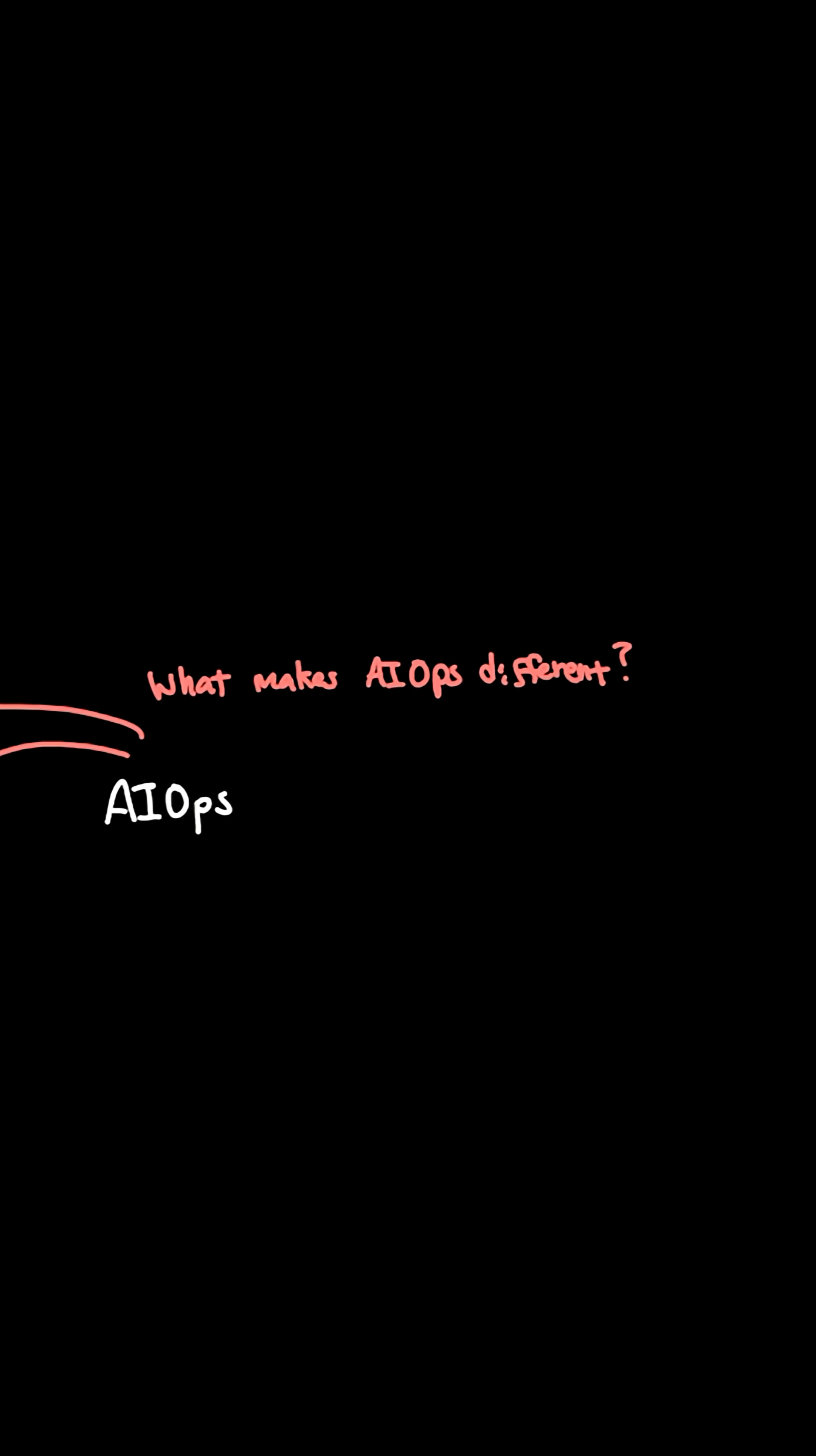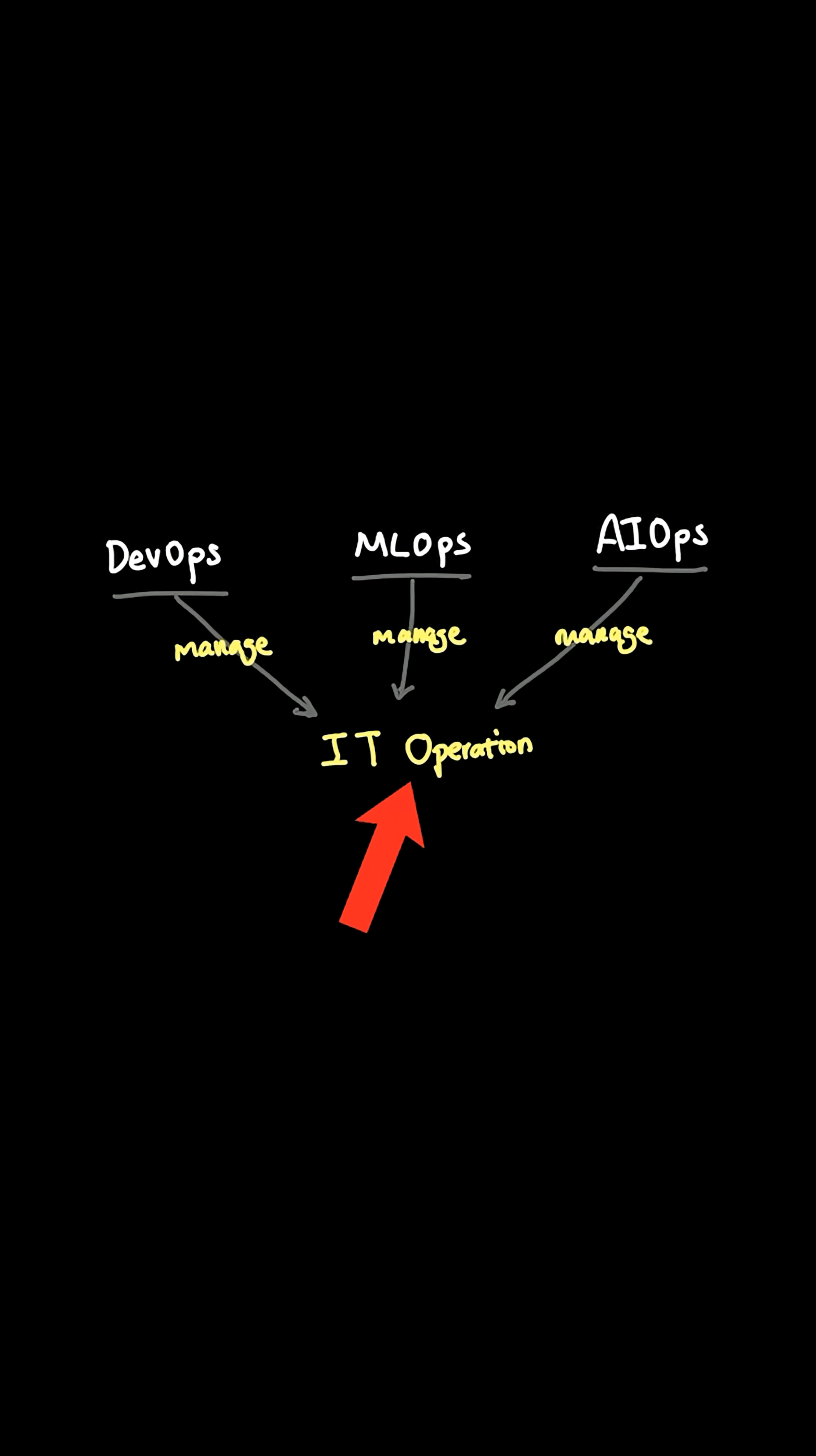What makes AIOps different from traditional DevOps and MLOps? The common element between them is IT operation. In all these practices, the primary focus is managing proper functioning of IT systems. Using different terminology beside the term ops provides the context for what IT system you're actually trying to manage.